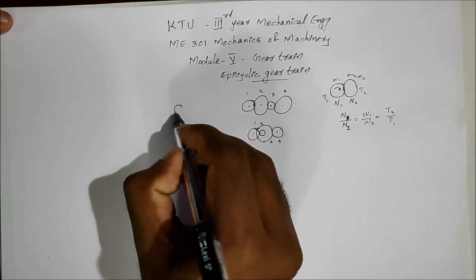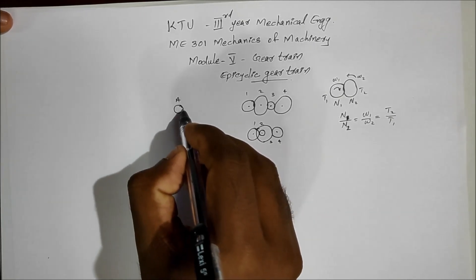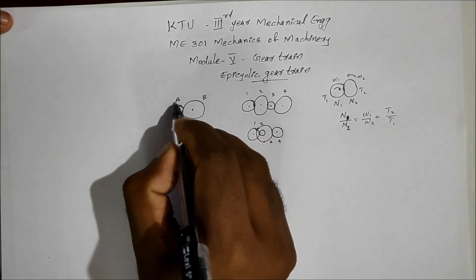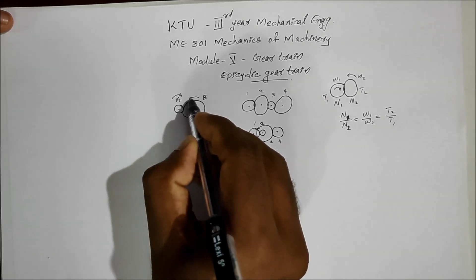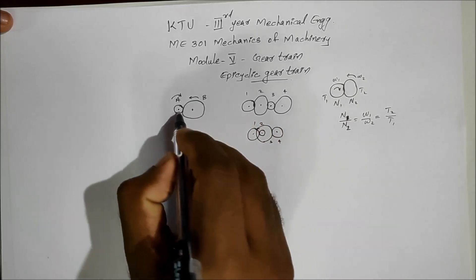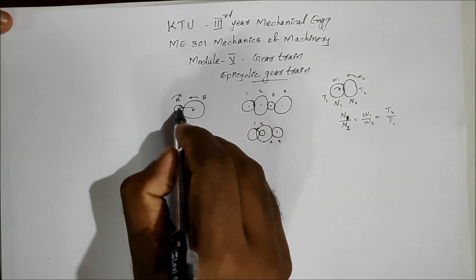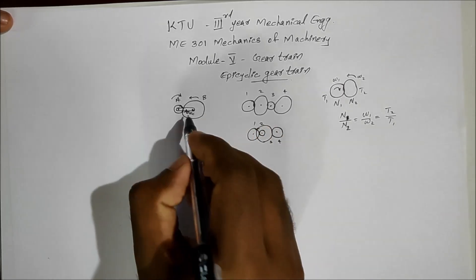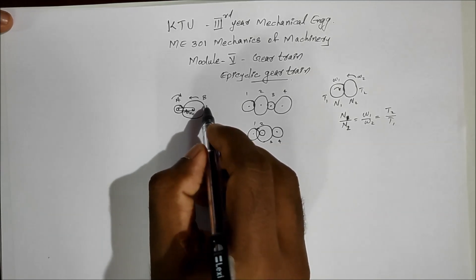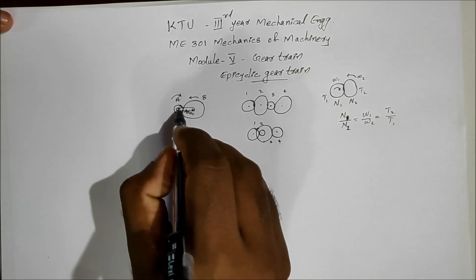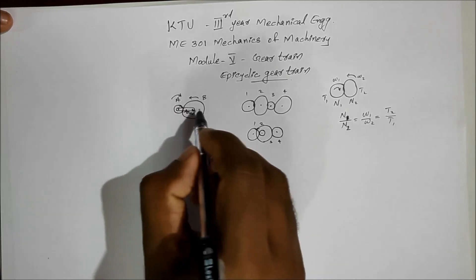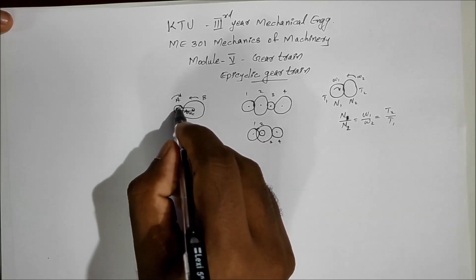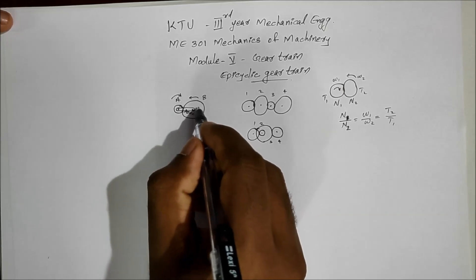In an epicyclic gear train, Gear A and Gear B are arranged with Gear A rotating in the clockwise direction and Gear B in the anticlockwise direction. These two gears are connected by an arm, Arm C. This type of gear train is known as an epicyclic gear train.